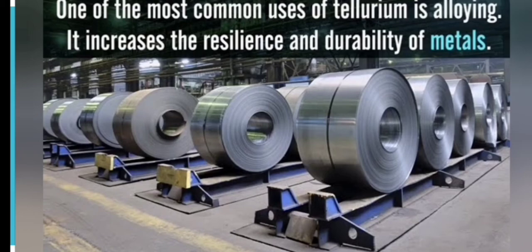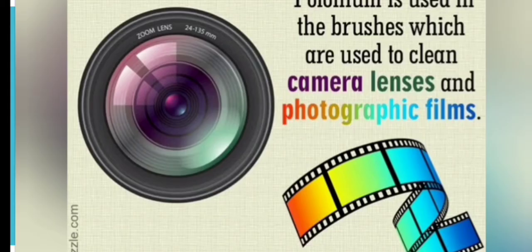And the last metalloid is polonium. It is used in the brushes which are used to clean camera lenses and photographic films. It is also used in paper rolling machines, spinning synthetic fibers, etc.